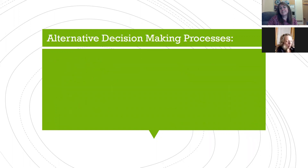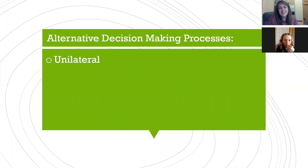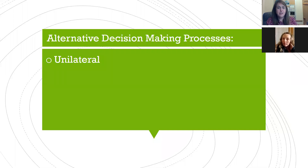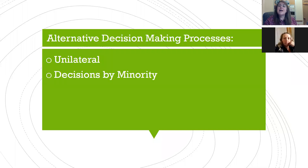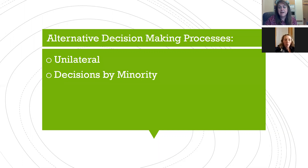Let's look at some alternative ways to make decisions. One way is unilaterally — you as the club leader or president says we're doing it this way. That doesn't really fit with our goal of young people making decisions. Another way is decision by a minority group, which actually works pretty well in 4-H — maybe your officer team makes some decisions, or a committee makes decisions for the entire group based on feedback.